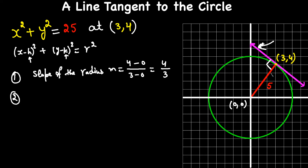For perpendicular lines, the slope of one line is equal to the negative reciprocal of the slope of the other line. The slope of the radius is 4/3, so the slope of this pink tangent line is going to be the negative reciprocal, which is -3/4.